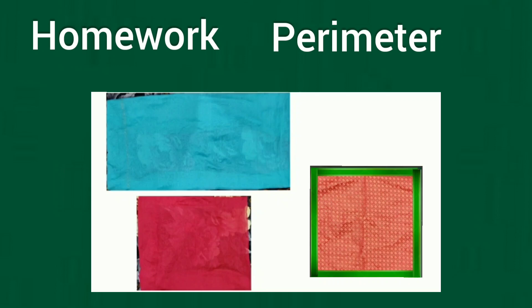Now it's time for homework. In your homework, you have to take different things present in your home like a dupatta, book, or hanky, measure all the sides of these things, and find the perimeter of each. Thank you.